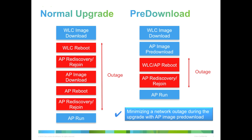the AP will continue to provide wireless services. Then the controller and the AP will reboot together. The AP will rediscover and re-join the controller, download the configuration, and start to provide wireless service again. As you can see from this comparison, the AP pre-image download can minimize network outage during the upgrade.